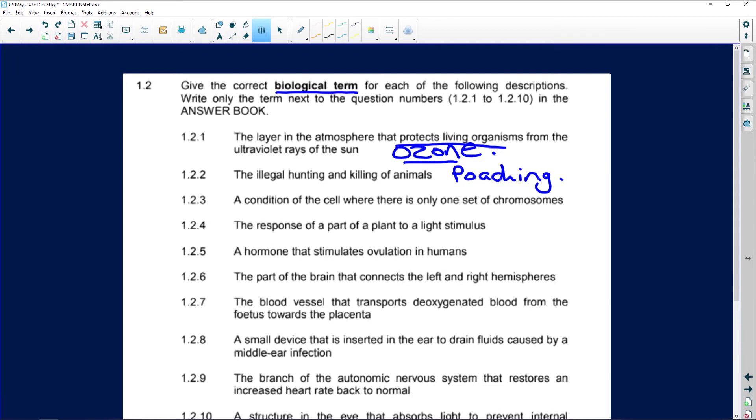A condition of a cell, so it's in the cell, where there is only one set of chromosomes is haploid. Remember, in your body, you are diploid. Why? Di means two. So diploid means two sets of chromosomes.